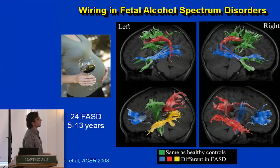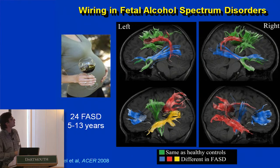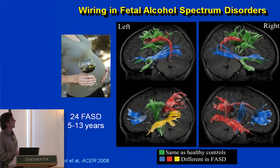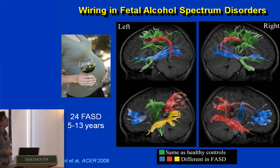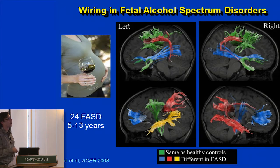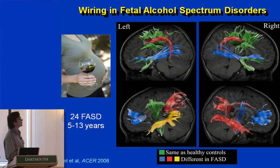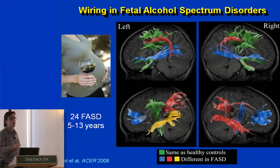Another example: comparing children with fetal alcohol spectrum disorder, where the brain is injured by alcohol ingestion during pregnancy. The blue, red, and yellow areas are tracts with significant diffusion differences between controls and subjects diagnosed with FASD. There's quite a bit of bilateral involvement — a lot of tracts are injured. It's a very prevalent disorder, unfortunately, and completely preventable. It demonstrates that there's a widespread network affected by this type of injury.